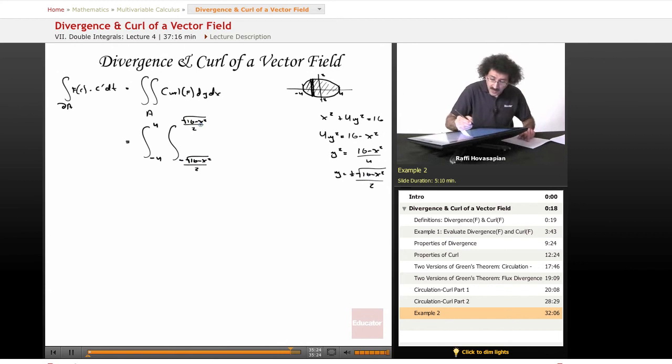So y is going from minus radical 16 minus x squared all over 2 to plus radical 16 minus x squared over 2. And of course I have my function here, which is the curl, 2xy times the cosine of x squared y plus x times sine xy times dy dx. And then when I end up putting this into my mathematical software, I get 0.